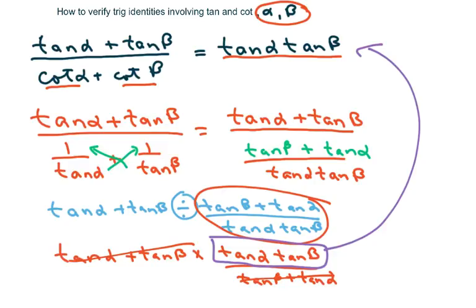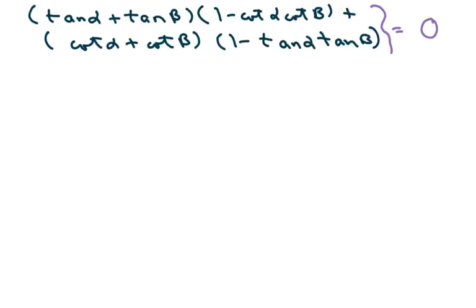Okay, the next problem is very similar, a little more complicated. Everything's written in terms of tan and cotan with two different angles. Plus, it's quite, it's longer and it's supposed to equal zero.